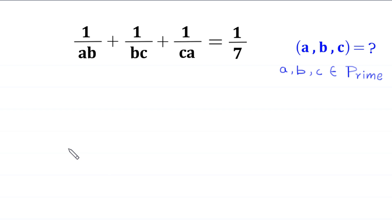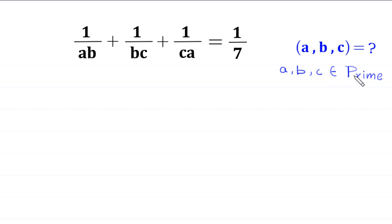Hello everyone, welcome to this problem. We need to solve a very nice algebra equation: 1 over ab plus 1 over bc plus 1 over ca is equal to 1 over 7. Our job is to find all possible values of a, b, and c such that a, b, and c are prime numbers. Let's start.